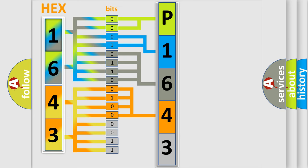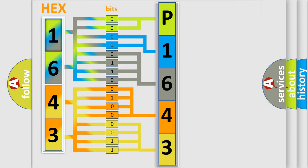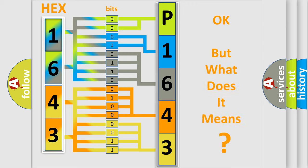A single byte conceals 256 possible combinations. We now know in what way the diagnostic tool translates the received information into a more comprehensible format. The number itself does not make sense to us if we cannot assign information about what it actually expresses.